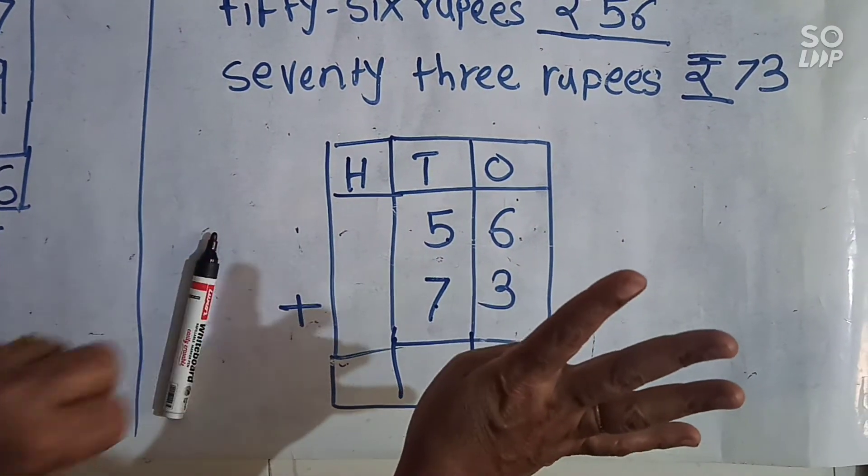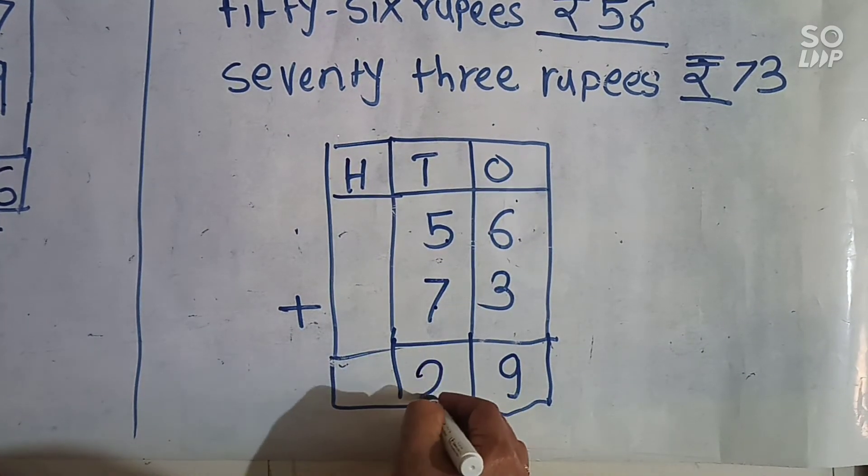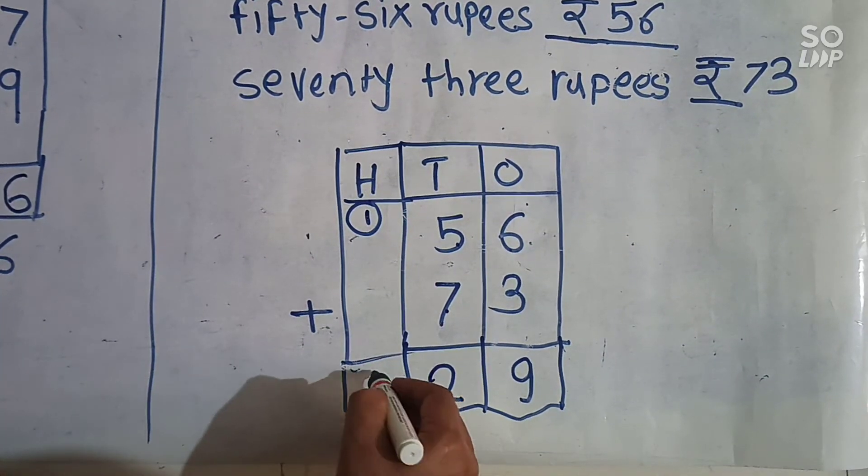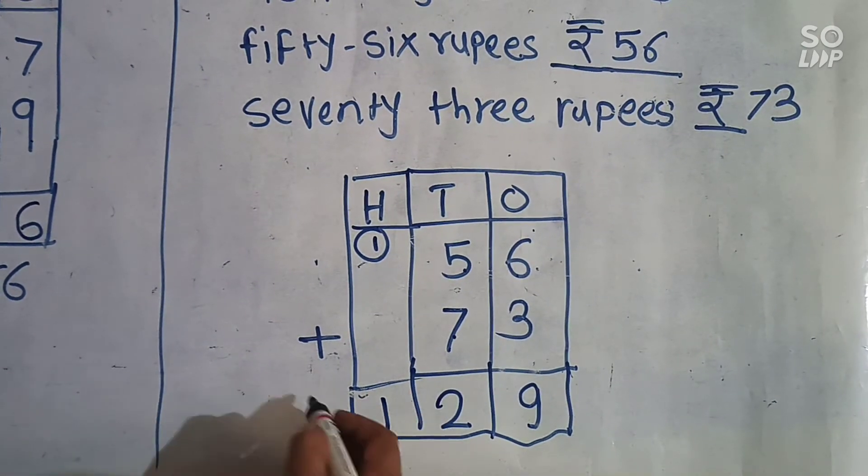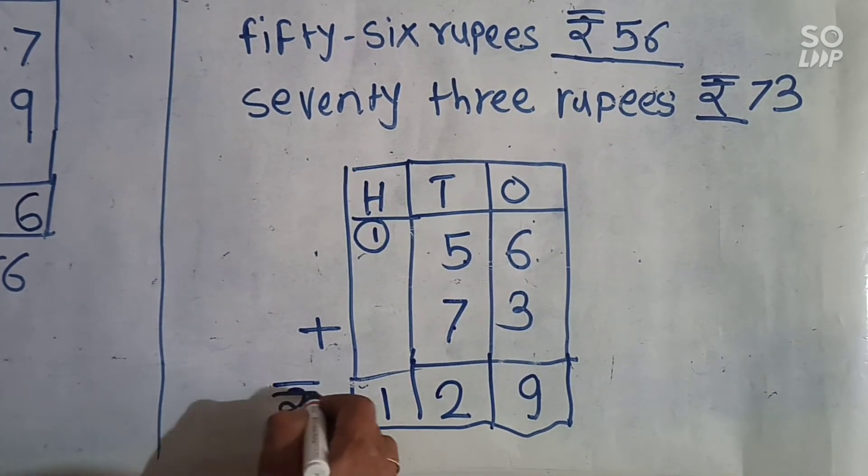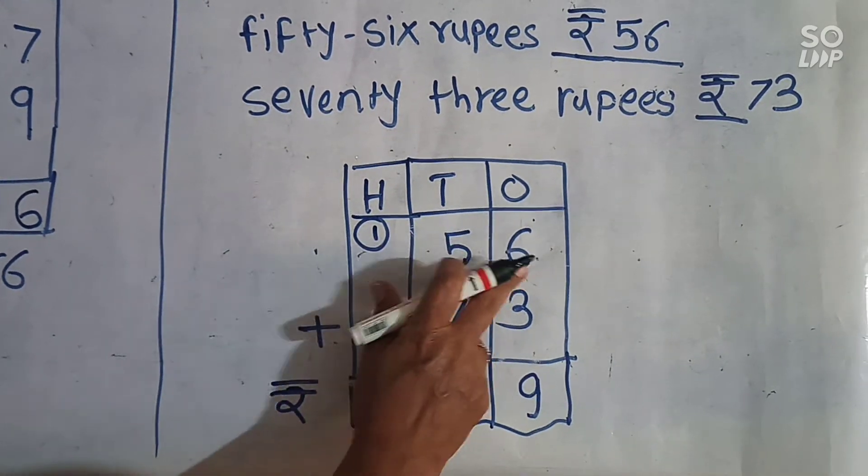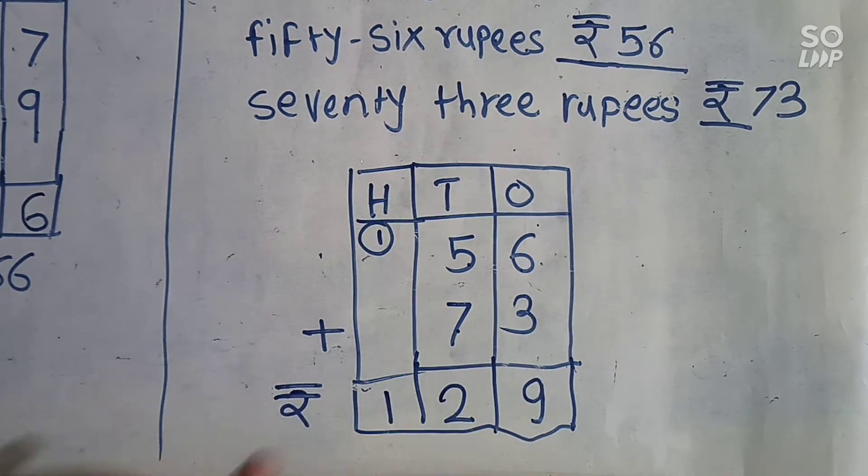6, 7, 8, 9, 10, 11, 12. So 12. Here carry forward 1 and we have to write here down. So answer is rupees 129, means 56 plus 73 is equal to 129.